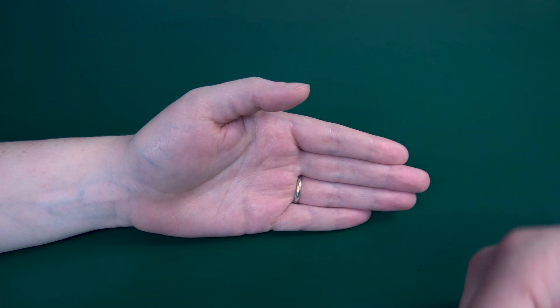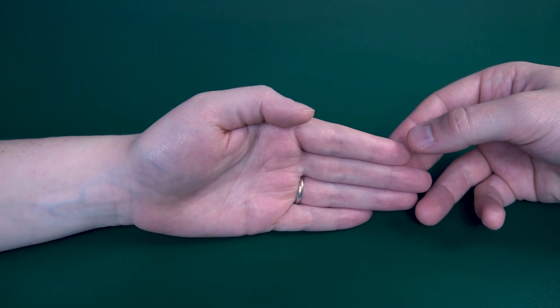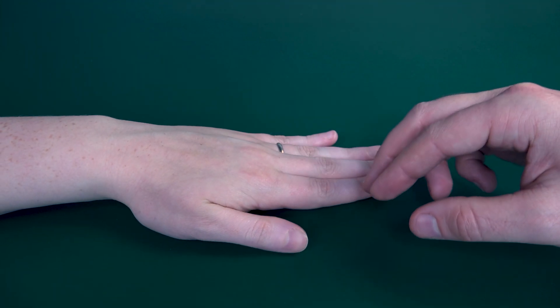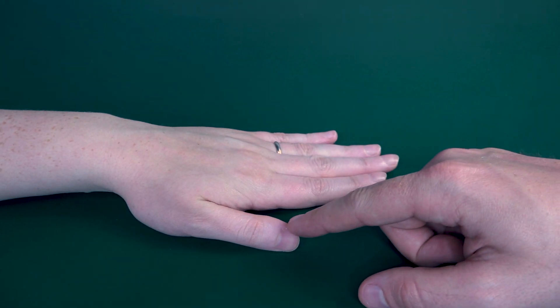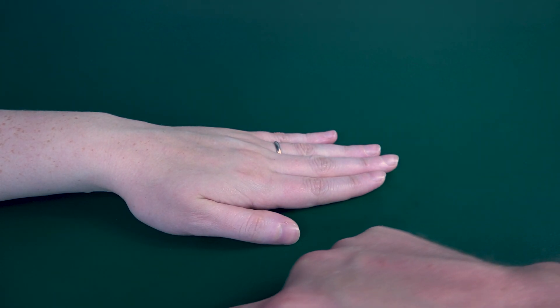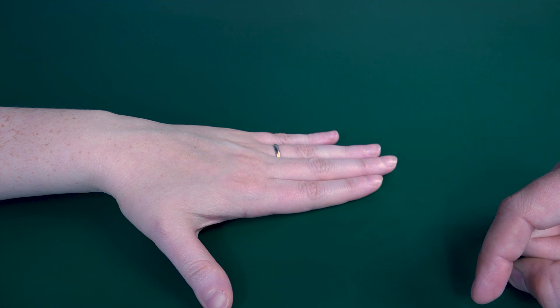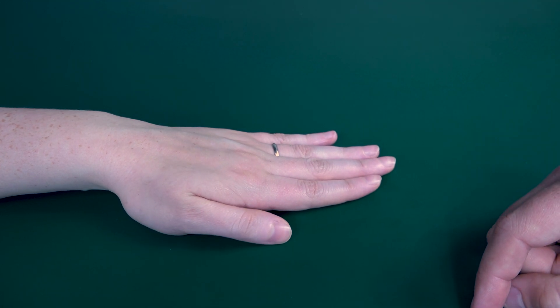If she could not bring her thumb into extension against gravity, I would use a gravity-eliminated position. This is simply having the palm downward on the table and letting the thumb slide across the table into extension, then bringing it back. If your patient is able to do this, that is a grade two.